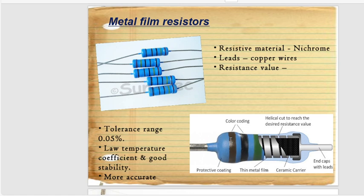For metal film resistors, the resistive material is nichrome with copper wire leads. The resistance value is available in less than one ohm values depending on the resistor chosen. The tolerance range is 0.05%. It has a low temperature coefficient, good stability, and is more accurate. Here you can see the manufacturing of metal film resistors.